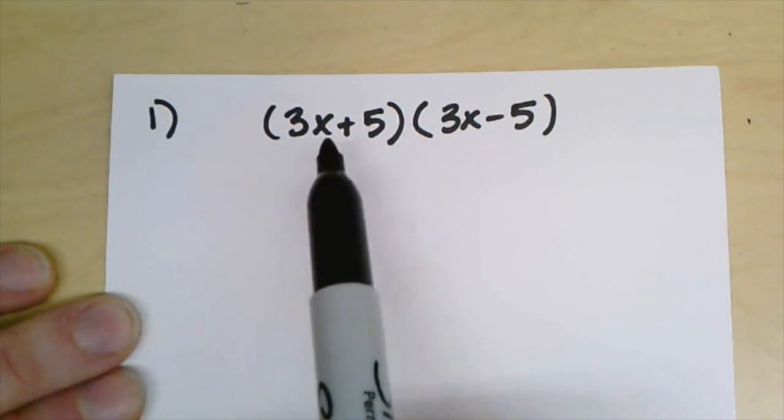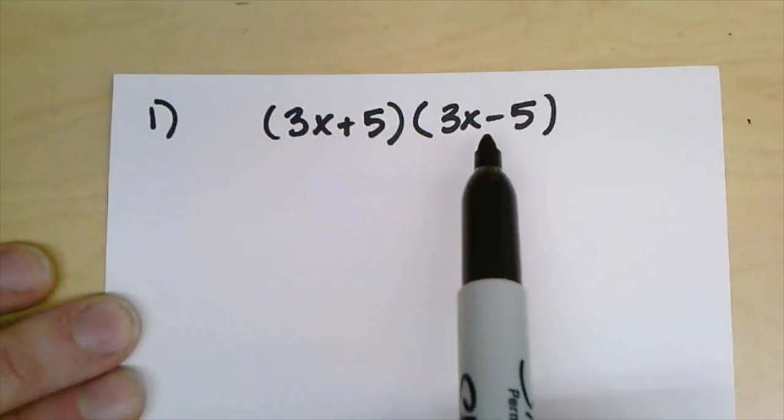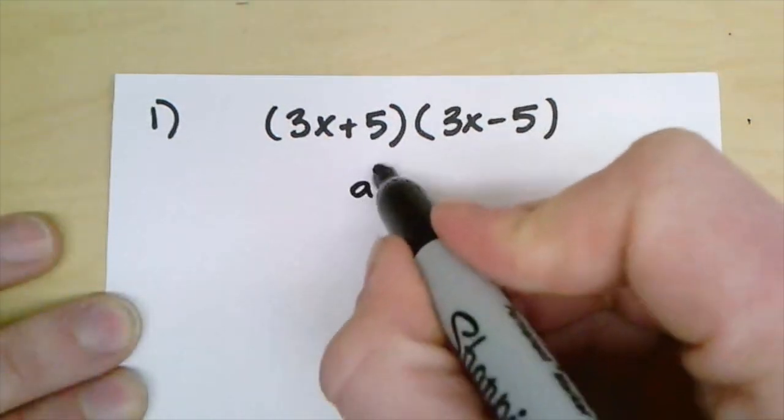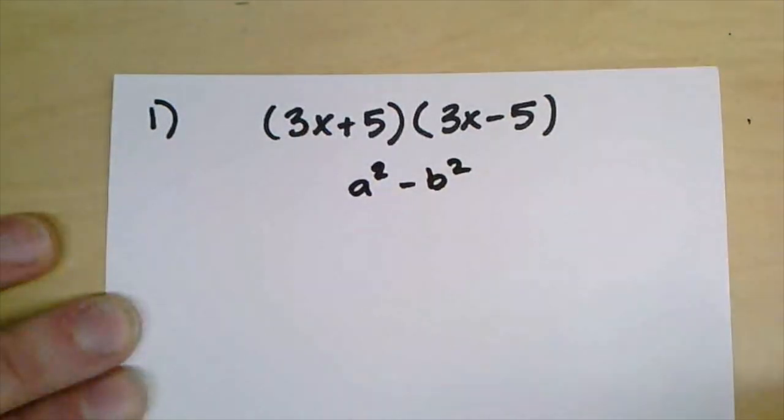If we see this pattern where it's the same terms just the only difference is a plus and a minus, we can use the form a squared minus b squared to get our answer.